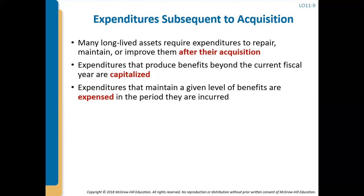Expenditures subsequent to acquisition: if you have a long-lived asset that requires other expenditures — repairing it, maintaining it, or improving it after purchase — here is how we account for that. Expenditures that produce benefits beyond the current fiscal year are capitalized. Expenditures that merely maintain a given level of benefits are expensed in the period they are incurred. If it's just routine maintenance that doesn't add to the asset or increase revenue, expense it. But if the expenditure will produce benefits in the future past this year, capitalize it.